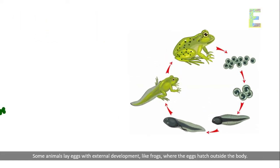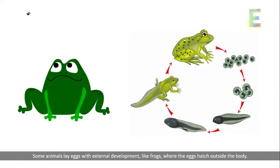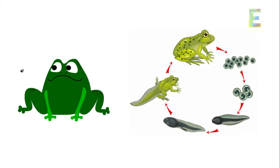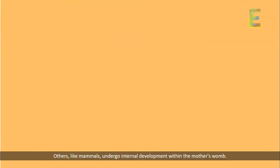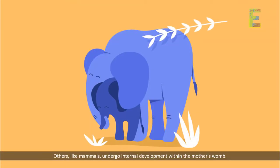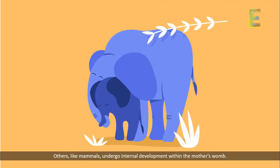The embryo's development can vary greatly among species. Some animals lay eggs with external development, like frogs, where the eggs hatch outside the body. Others, like mammals, undergo internal development within the mother's womb.